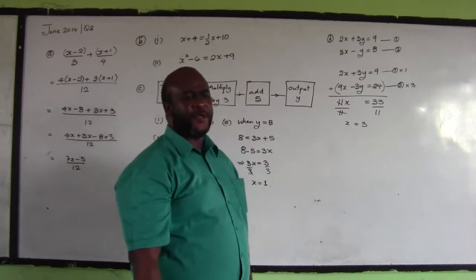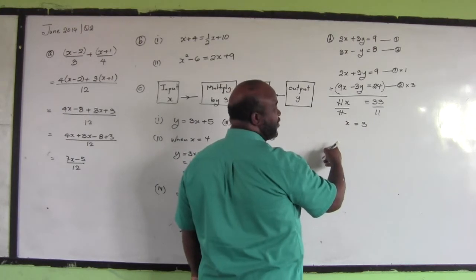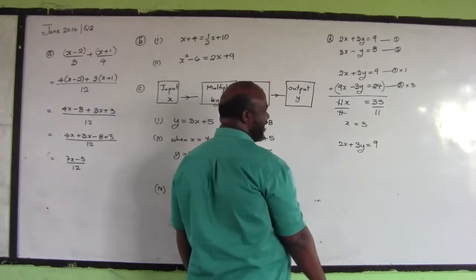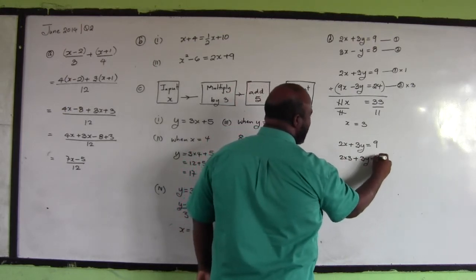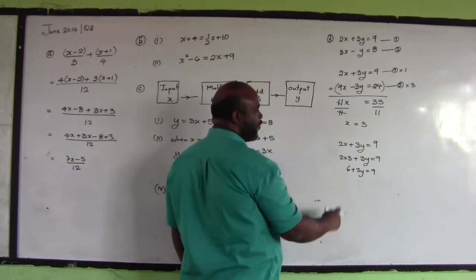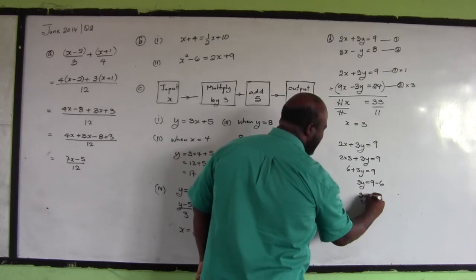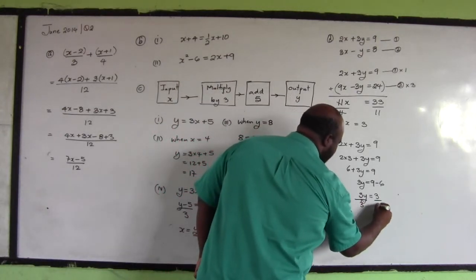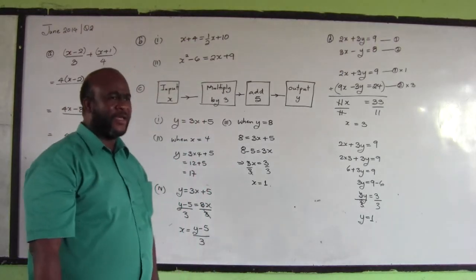To find y, substitute x equals 3 into equation 1: 2 times 3 plus 3y equals 9, so 6 plus 3y equals 9. Positive 6 goes over and becomes negative: 3y equals 9 minus 6, so 3y equals 3. Divide both sides by 3: y equals 1. Therefore x is 3 and y is equal to 1.